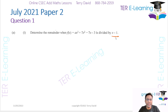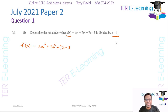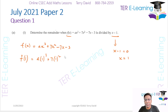We are dividing f of x by x minus 1. So f of x is ax cubed plus 7x squared minus 7x minus 3. If you want to divide by x minus 1, we substitute x minus 1 equals 0, therefore x equals 1. Substituting 1: a times 1 cubed plus 7 times 1 squared minus 7 times 1 minus 3. That gives us a plus 7 minus 7 minus 3, which is a minus 3. So the remainder is a minus 3.